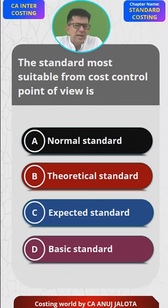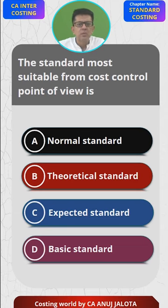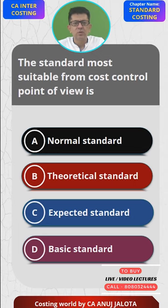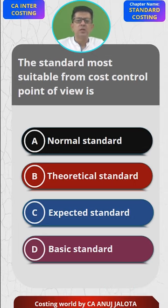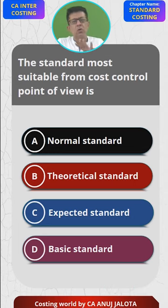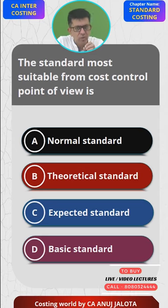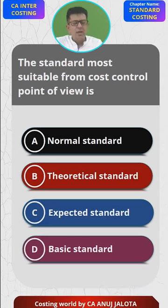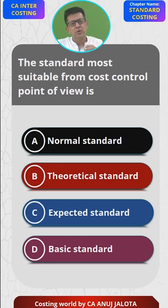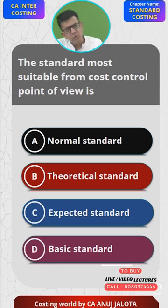Normal standard means the standard that is achievable if normal conditions prevail. Normal conditions means not good, not bad — nothing abnormal happens. For example, if nothing bad happens in the market, we can be producing say 10,000 units in a year. That is normal standard.